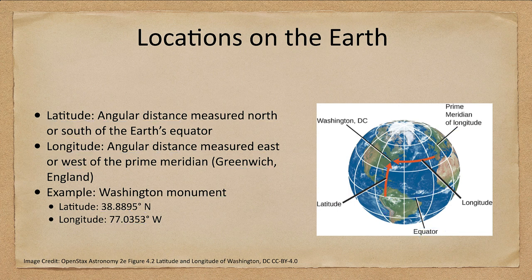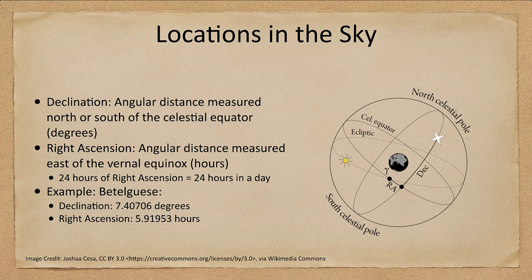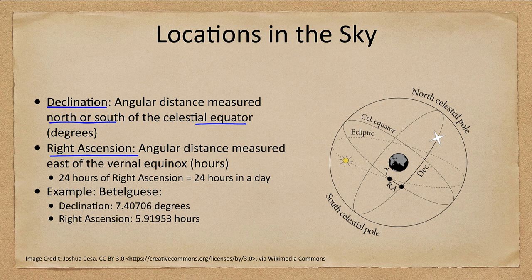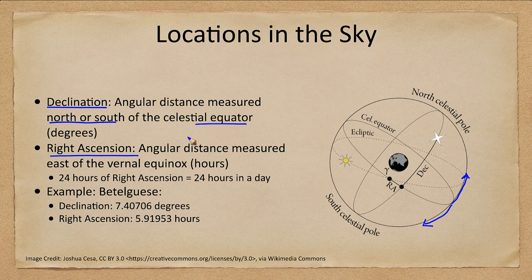We can do something very similar in the sky. To locate objects there, we need two coordinates: declination and right ascension. Declination is similar to latitude — it is an angular distance measured north or south of the celestial equator. That should sound very familiar to how we determined latitude on Earth. You measure how far you go north toward the north celestial pole, or south toward the south celestial pole, from the celestial equator.